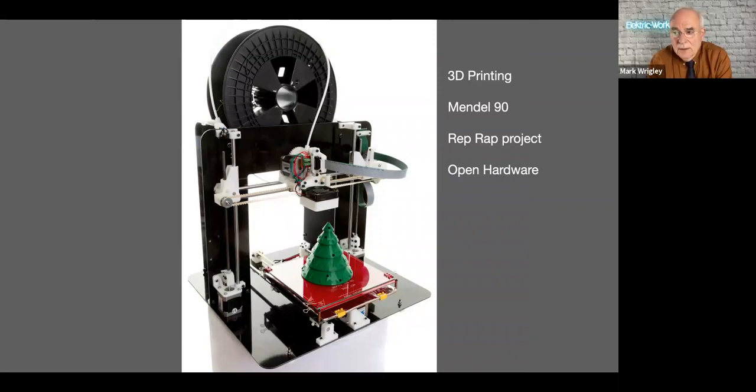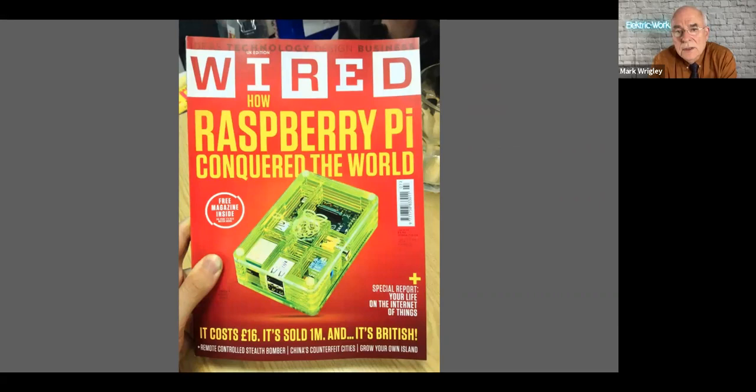So fast forward a little, around about 2012, 2013, I started to notice that there was a move to home 3D printing. And I found that quite exciting. This printer that I've got a picture of is actually the one we used on the project. It's called a Mendel 90 and it's from a project called RepRap, which makes 3D printers from 3D printed parts and uses open hardware so that anybody can make their own 3D printer without having to buy anything. So I was quite interested in this.